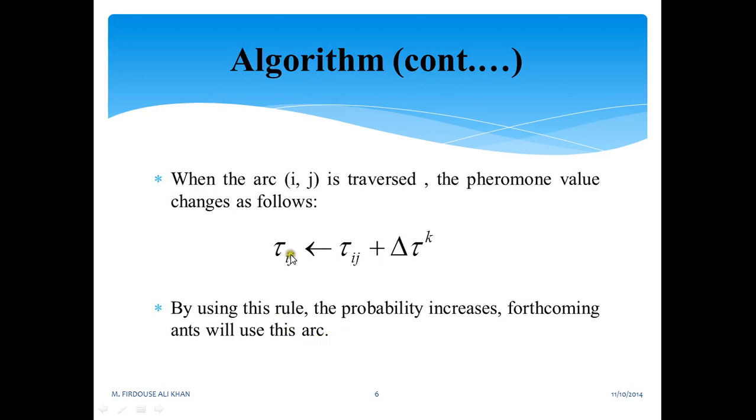When the arc (i, j) is traversed, the pheromone values change as follows. This is how the change in pheromone value can be seen by using this rule. The probability increases for coming ants to use this arc if pheromone is found with increasing probability, then there increases the probability of the path being followed.